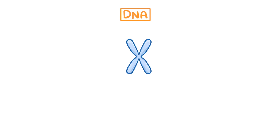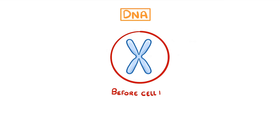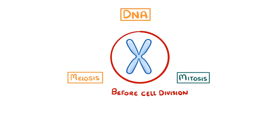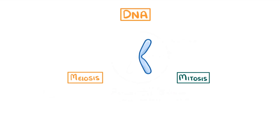The really confusing thing about chromosomes though is that you'll often see them drawn as though they're all in an X shape. However they only look like this just before cell division, for example before they undergo meiosis or mitosis. Usually when our cells are at rest, the chromosomes look more like this.